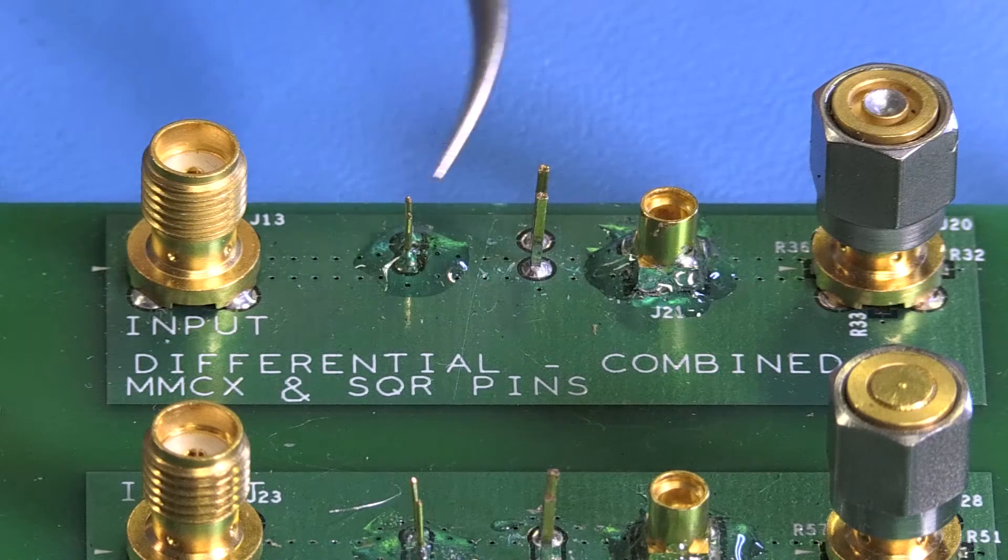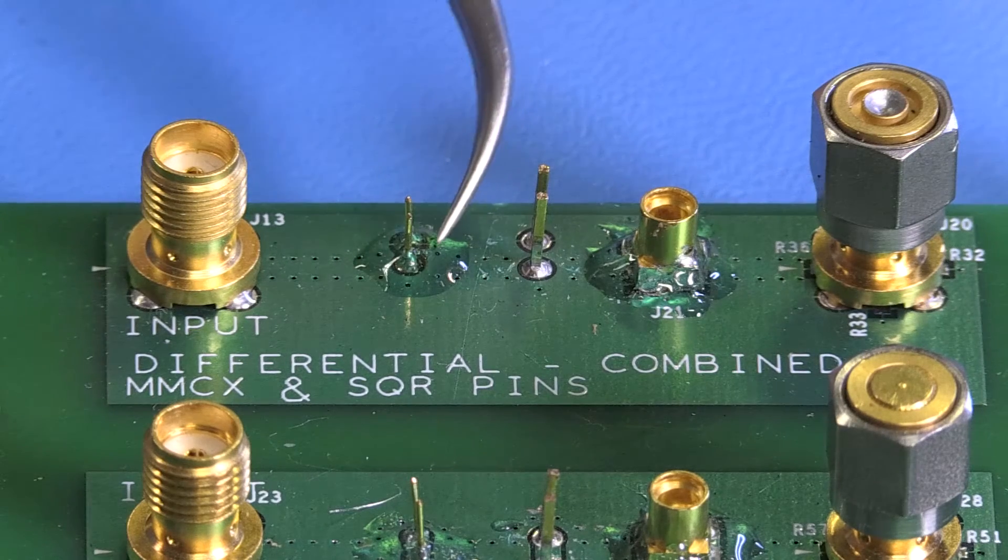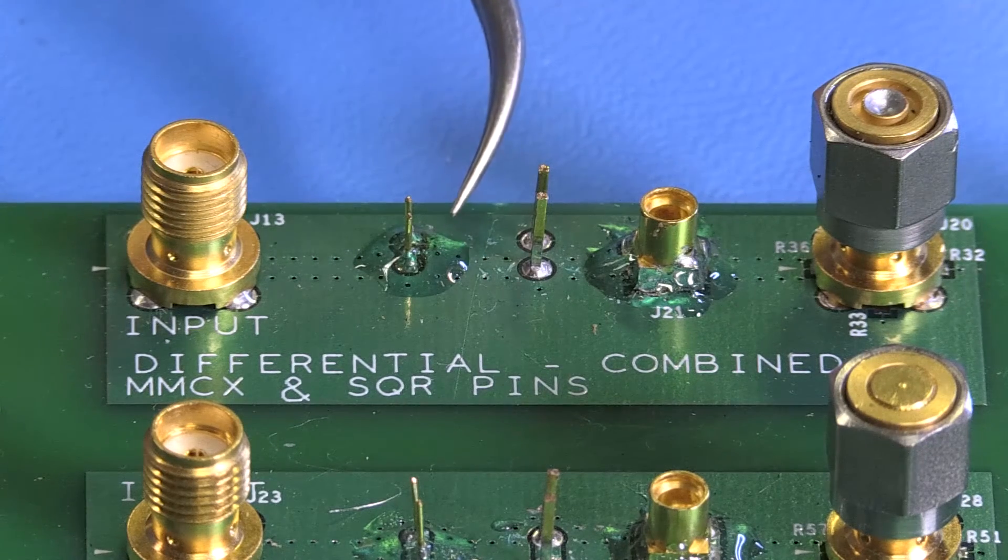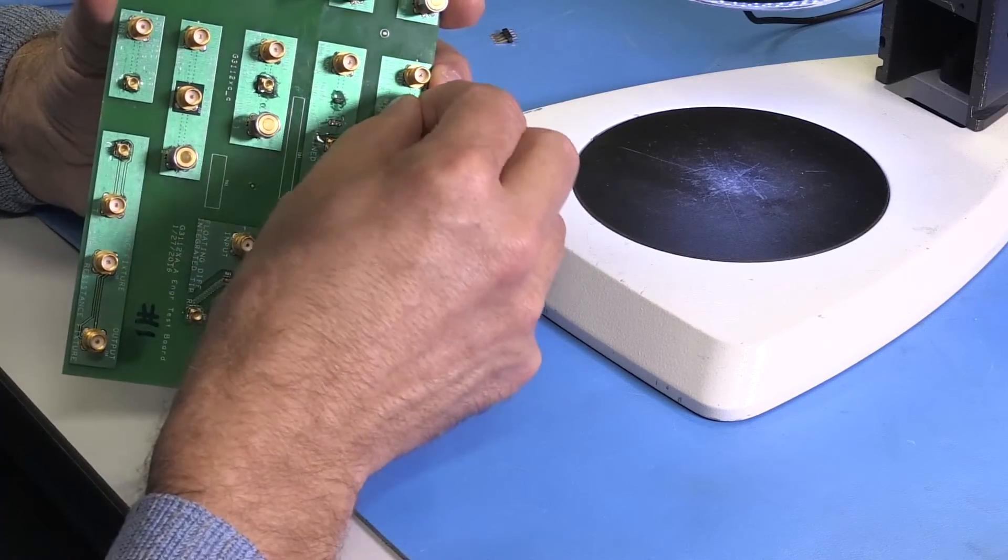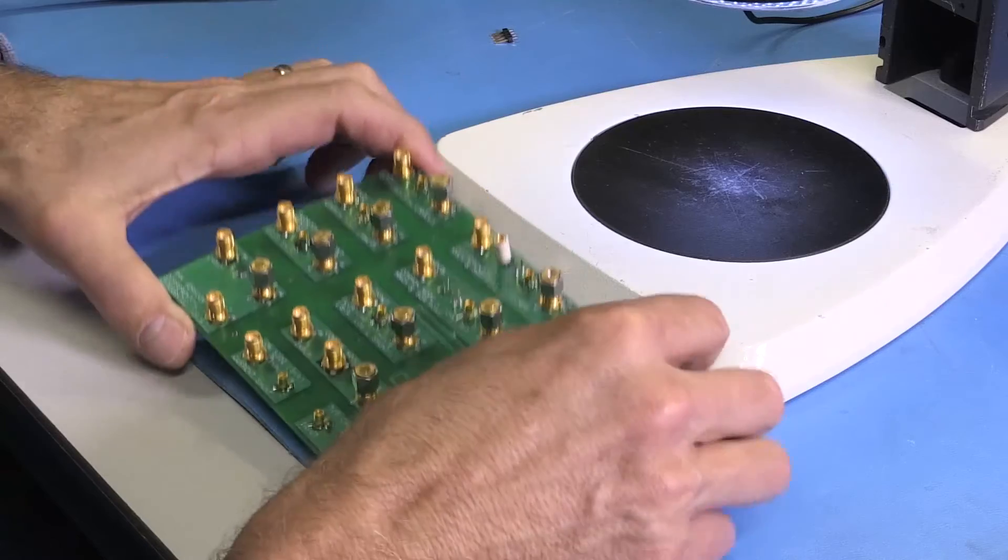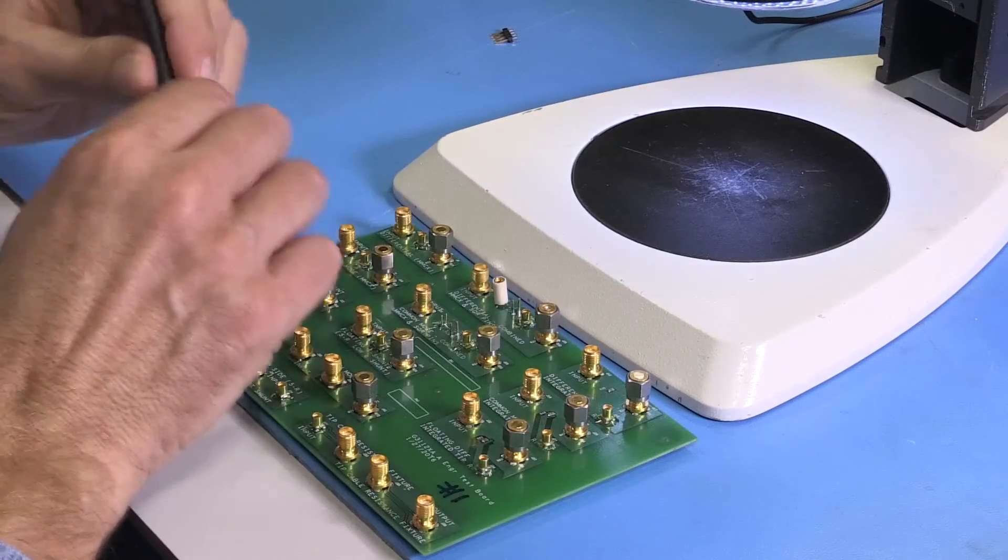Since these pins are so small one of the steps we recommend is to reinforce the connection between the pins and the board with some epoxy. This will help keep the devices and traces on the board from being damaged due to the mechanical stresses introduced by connecting the adapter and tip cable to the DUT.